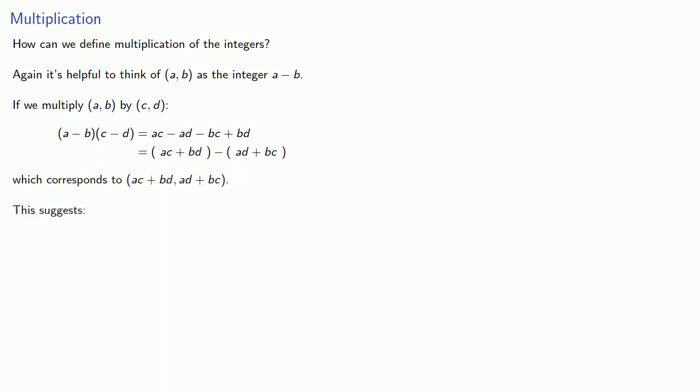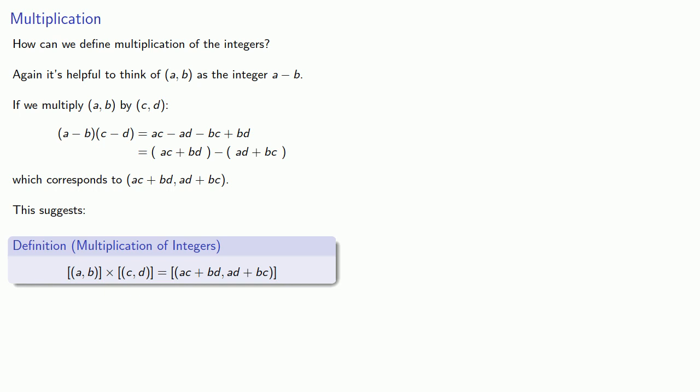This suggests a way we can define the multiplication of two equivalence classes when the equivalence classes represent integers. Of course this is well defined and the product of two integers is an integer. Well maybe you should prove these things.